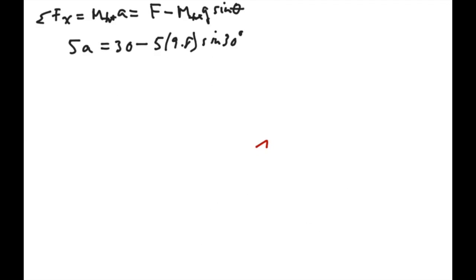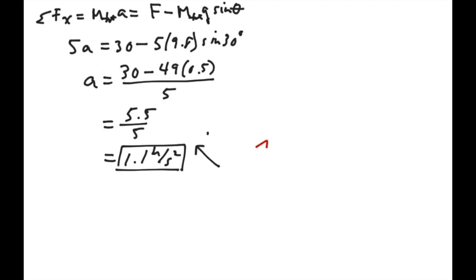Solving this for a, a is going to equal 30 minus 49 times 1 half, which is the sine of 30 degrees, divided by 5. So that's going to be 30 minus 24.5, which would be 5.5, divided by 5, or we'll have acceleration of 1.1 meters per second squared. And it came out positive, so we can be assured that we did assume the correct direction up the incline.